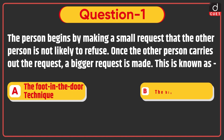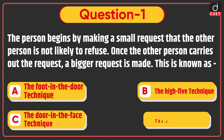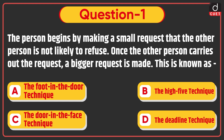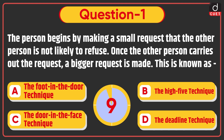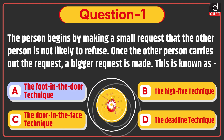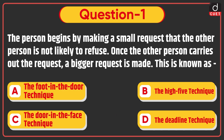Now let's begin today's session. First question: The person begins by making a small request that the other person is not likely to refuse. Once the other person carries out the request, a bigger request is made. This is known as — the Foot in the Door technique, the High Five technique, the Door in the Face technique, or the Deadline technique? The correct answer is Option A, the Foot in the Door technique.